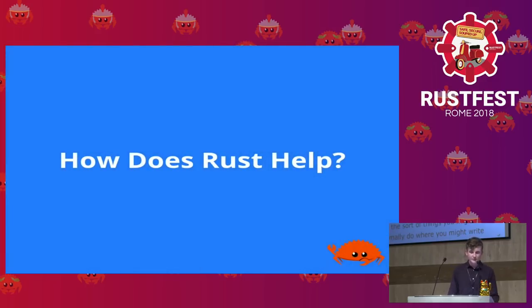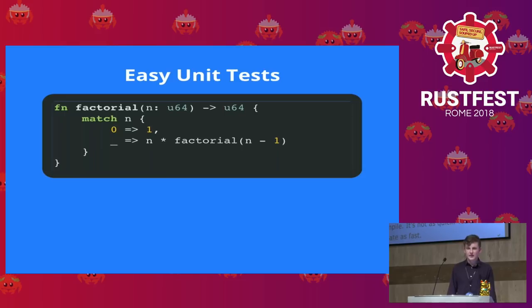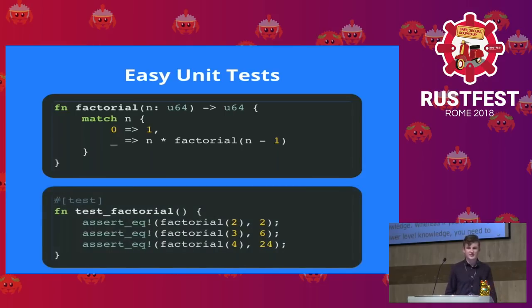This is a place where Rust can actually help. For example, for testing — here is a function that just does a factorial. In Python, you'd probably open the interpreter and type a few things to see if it works. In Rust, you can just add a test because it's built into the language. Those sorts of things become really, really easy.